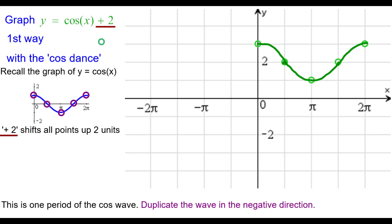We'd like to duplicate that in the negative direction. To do that, we'll go back a period starting at zero comma one and go back two pi to negative two pi comma three. This point goes back a period two pi from that to negative three pi over two comma two.